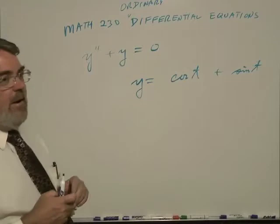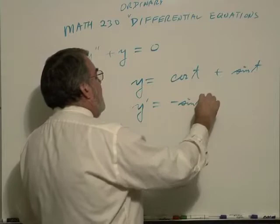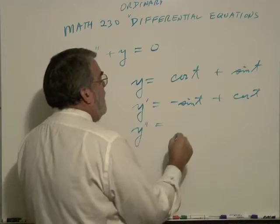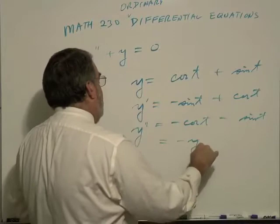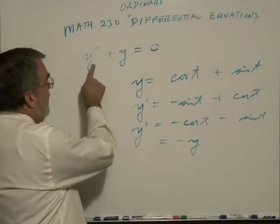the first derivative is minus sine t plus cosine t. The second derivative is minus cosine t minus sine t,